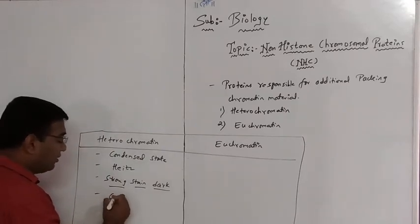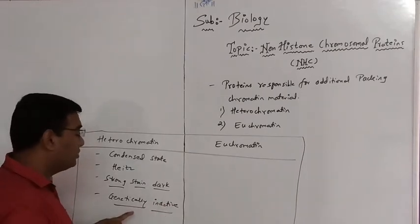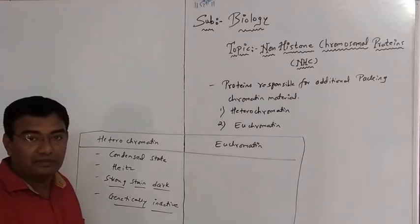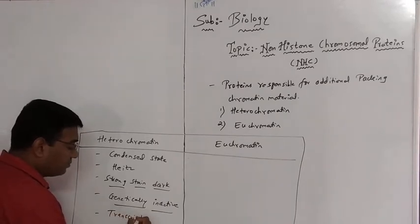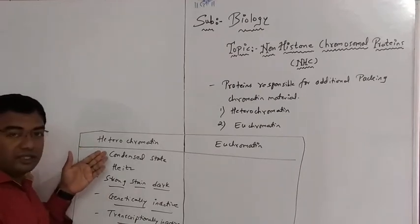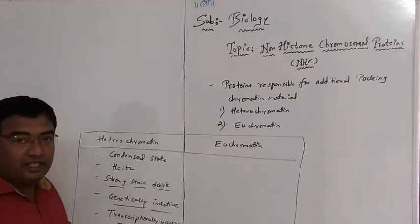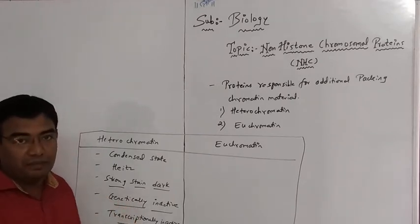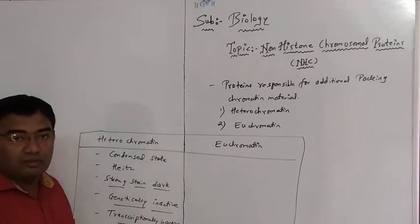Heterochromatin are genetically inactive — a very important point. They are genetically inactive because they generally don't take part in the transcription process; we may also say they are transcriptionally inactive. They also generally don't participate in DNA replication.